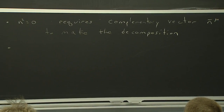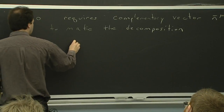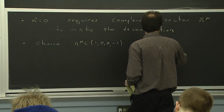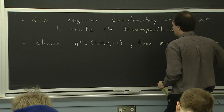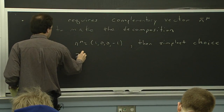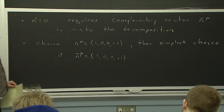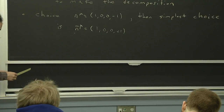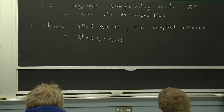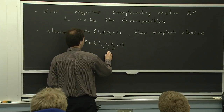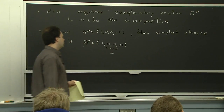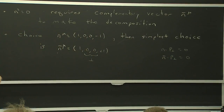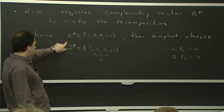The simplest choice: if we choose n = (1, 0, 0, -1), then the simplest thing for n-bar is (1, 0, 0, +1). That's a light-like vector, and when you dot it into n you get 2, satisfying all required criteria. PERP is defined such that n·PERP = 0 and n-bar·PERP = 0 — it's the two directions orthogonal to those picked out by n and n-bar. You could also choose n-bar = (3, 2, 2, -1), which also squares to 0 and satisfies n·n-bar = 2 — that's an equally valid choice.